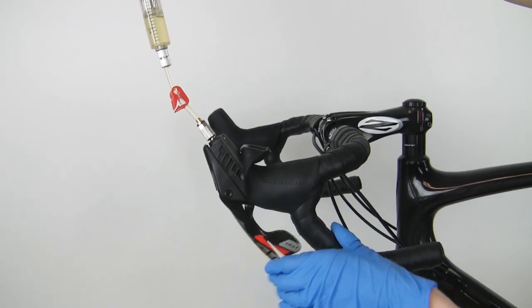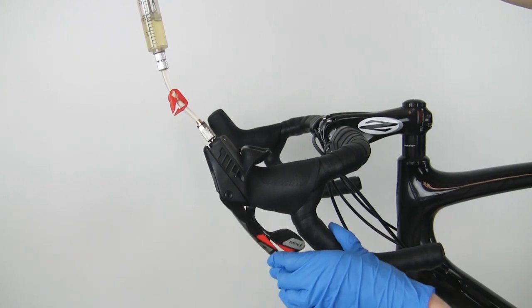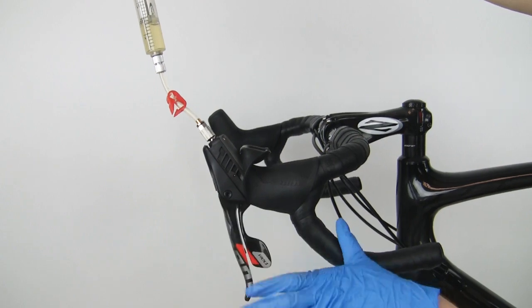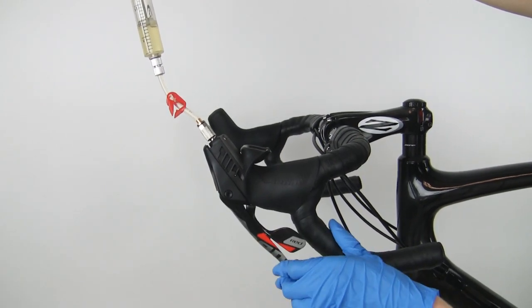Squeeze and release the brake lever ten times, allowing the lever to snap back to its starting position. Repeat this procedure several times until large bubbles stop coming out of the lever.